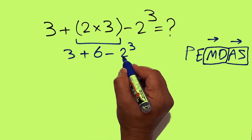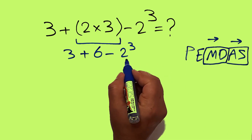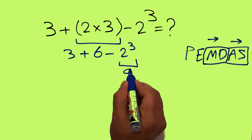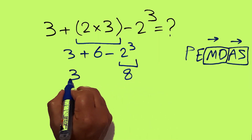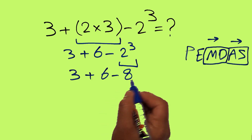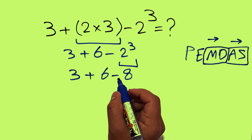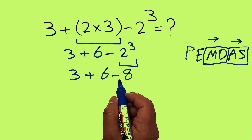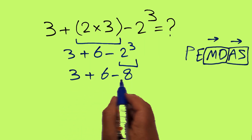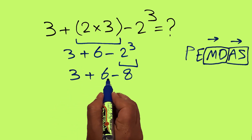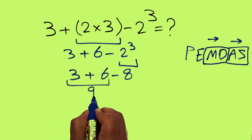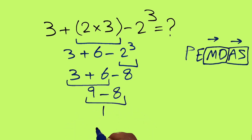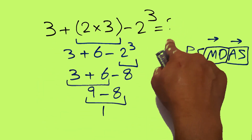According to PEMDAS, now we have to calculate 2 cubed. 2 cubed equals 8. So we have 3 plus 6 minus 8. Remember that addition and subtraction have equal priority, and we have to work from left to right. So 3 plus 6 equals 9, and 9 minus 8 equals 1. Therefore, our final answer to this problem is 1.